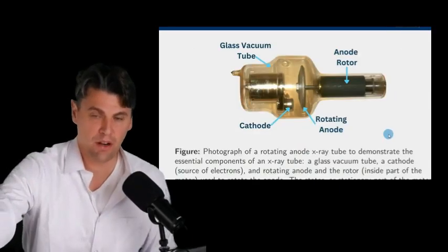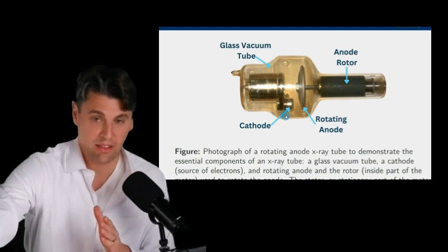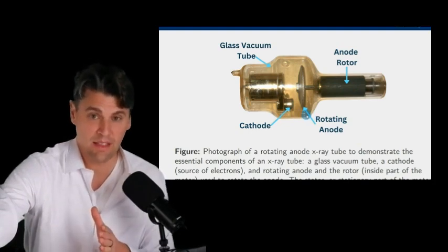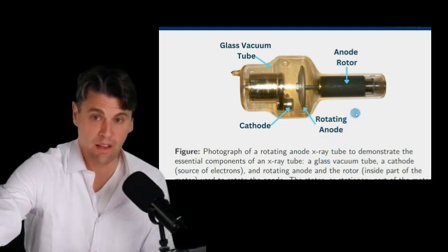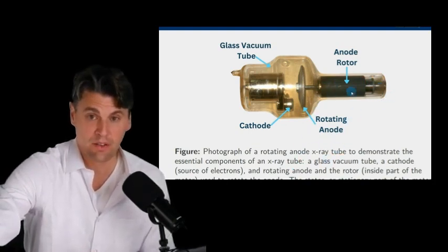Another view of a picture of what we call the insert. Right here is the cathode. Electrons come out, they will hit the anode while it's rotating, and then the x-rays will come down here. This is the insert. So this has the rotor, or the rotating part as well.